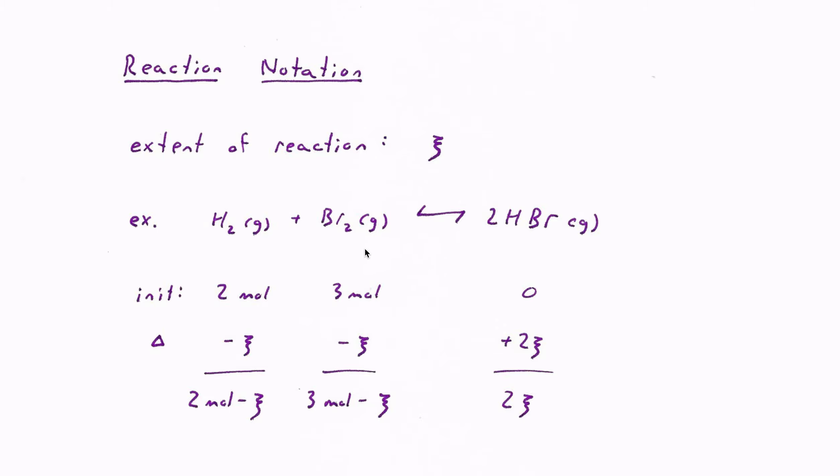For example, in our H2 and Br2 reaction, if we started with, let's say, two moles of H2 and three moles of Br2 and no HBr initially, and the reaction has preceded some certain amount, XI or squiggle,